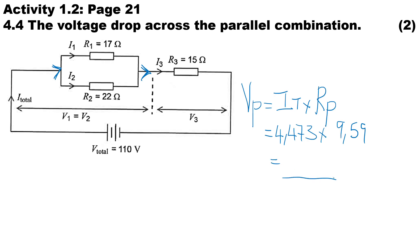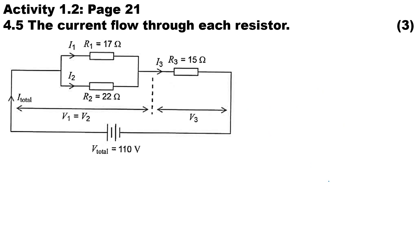Okay, moving on to 4.5: calculate the current flow through each resistor. It's important to note that I total will be the same current passing through I3, so I total equals I3, and we have calculated the total current: it is 4.473 amps.